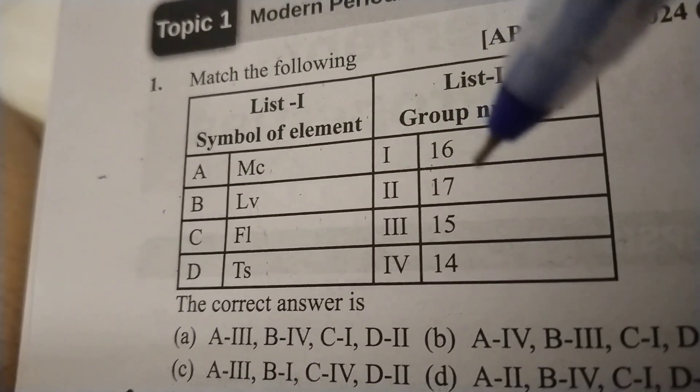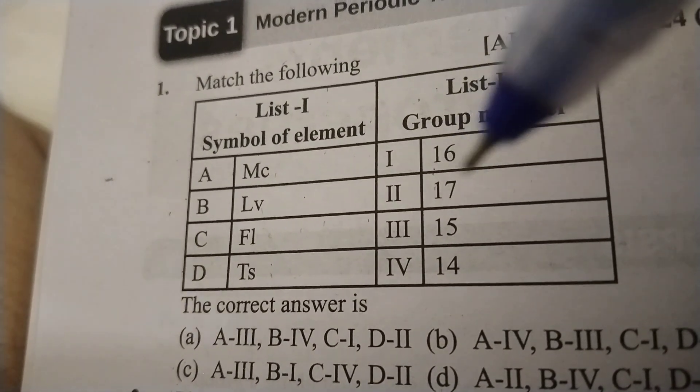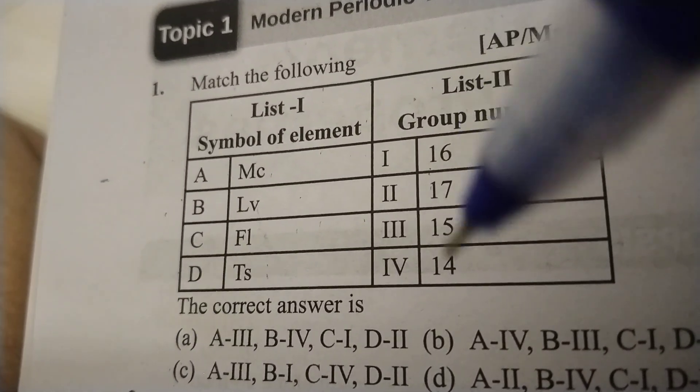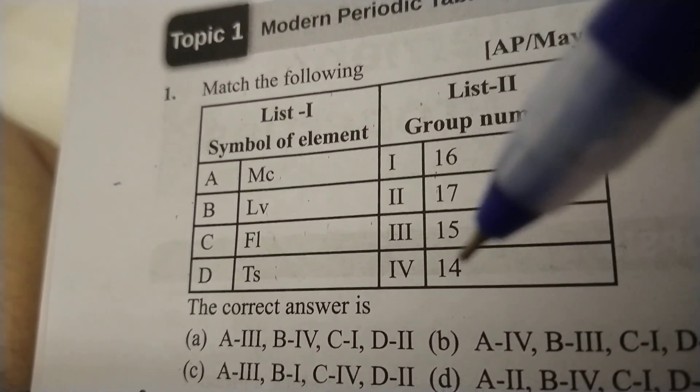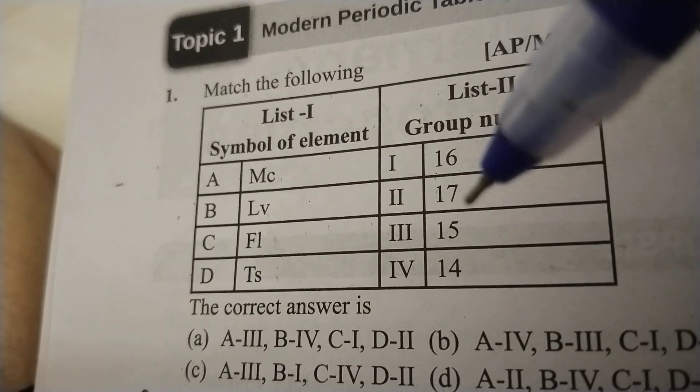So 17th group element - 17th group means halogen family, 14th group means carbon family, 15th group means nitrogen family.